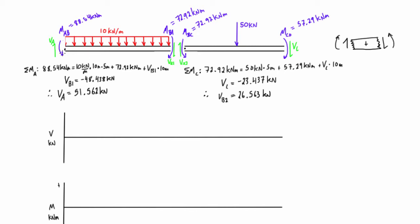We already know the internal shears at the ends of each span. Looking at this, we have positive shear because this is going up to the left of a virtual cut — that's the positive sense — so we have positive 51.562 kilonewtons of shear right at that end. The shear just to the left of support B is negative 48.438 kilonewtons.